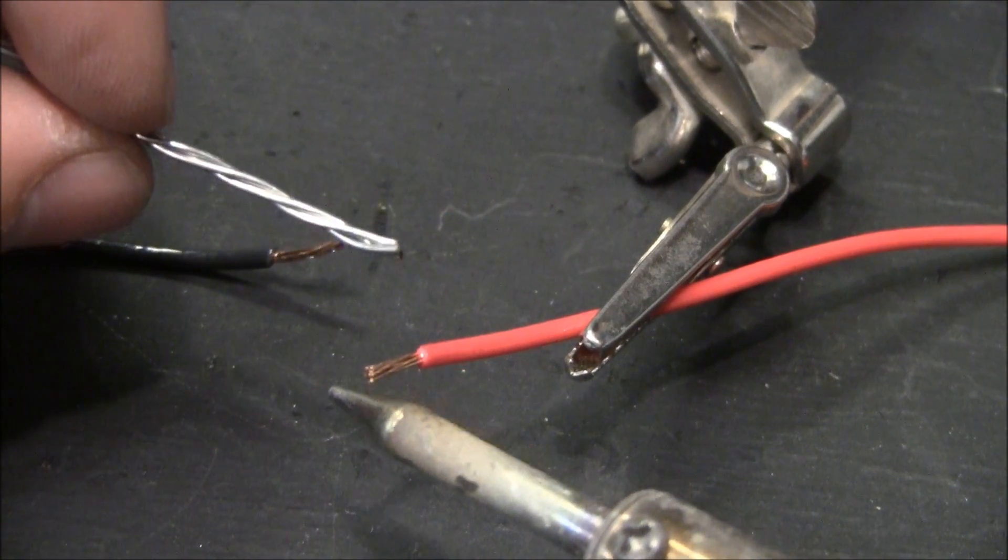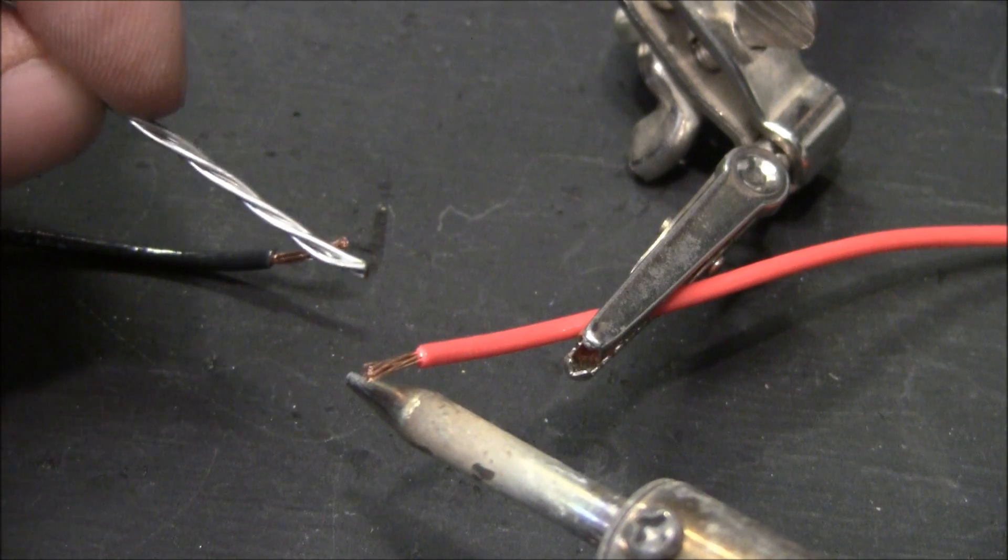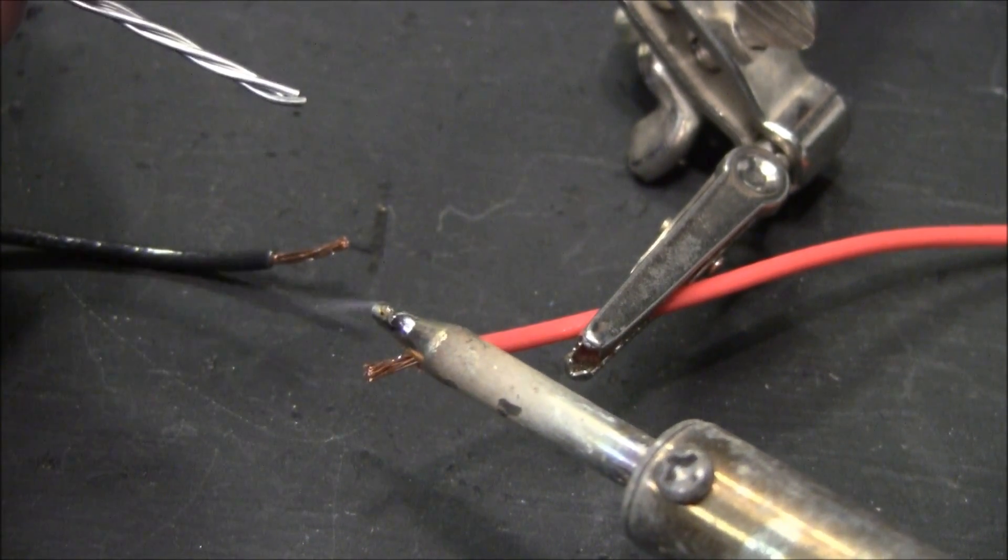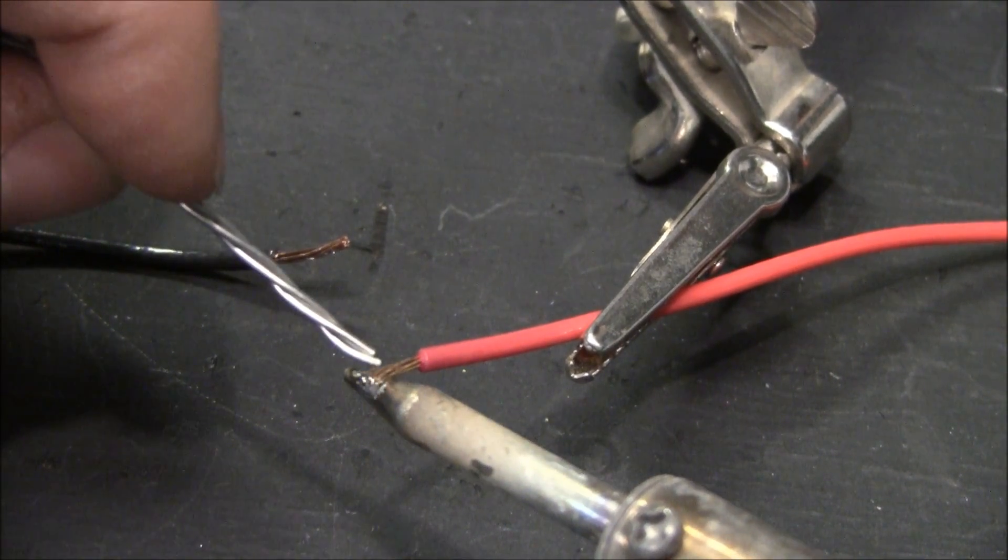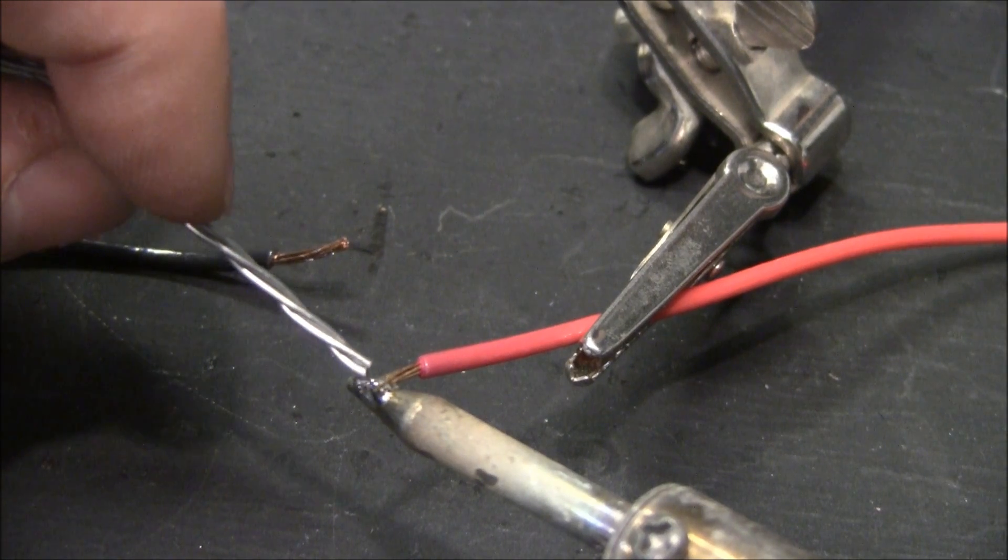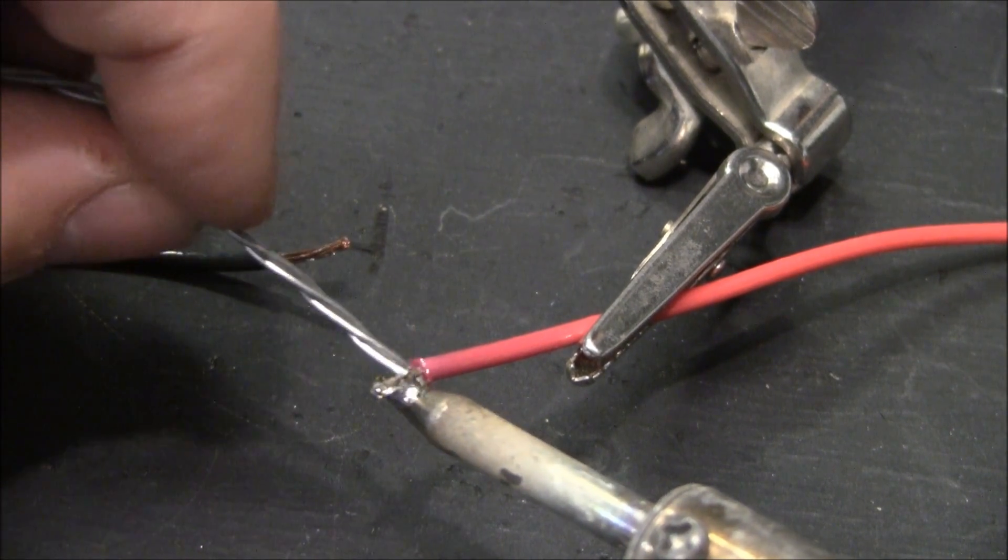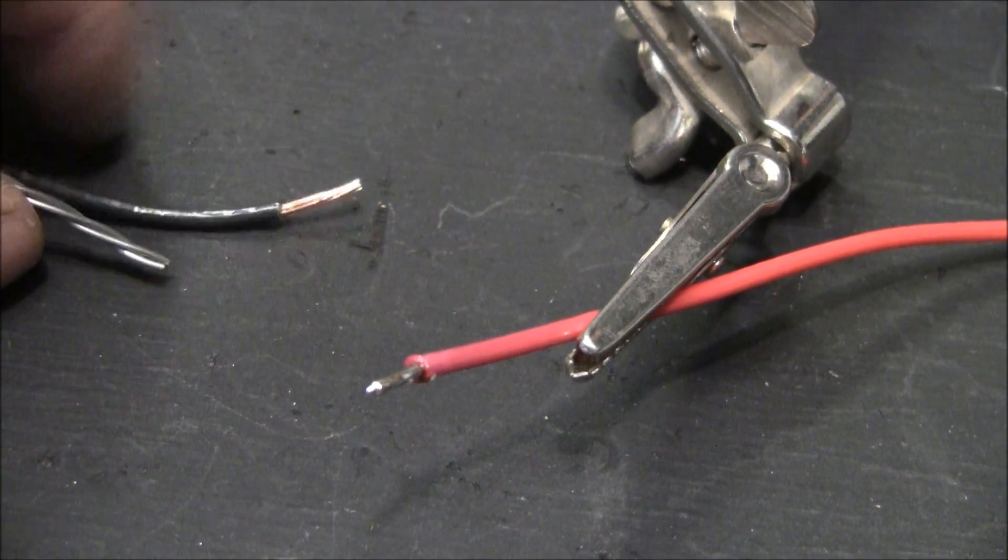What you want to do is get the wire hot and you want the solder to melt onto the wire. You don't want to just melt the solder and then stick it on there. You want your wire to be hot and you'll see it kind of melt in and wick. The wire will actually absorb the solder and that's a really good tinned wire there.